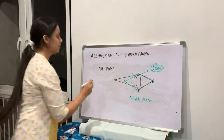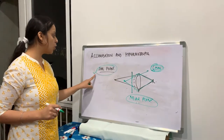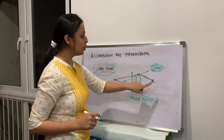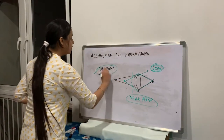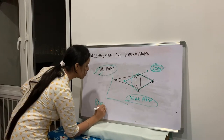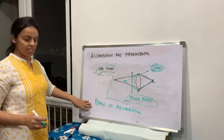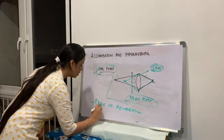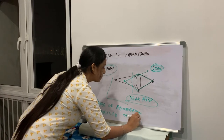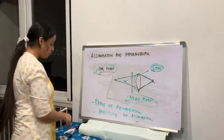So there is a far point and a near point. The far point is where, without accommodation, the image gets focused on the retina. The near point is where, after maximum accommodation, an image forms on the retina. The difference between far point and near point is your range of accommodation. When expressed in diopters, it is called the amplitude of accommodation.